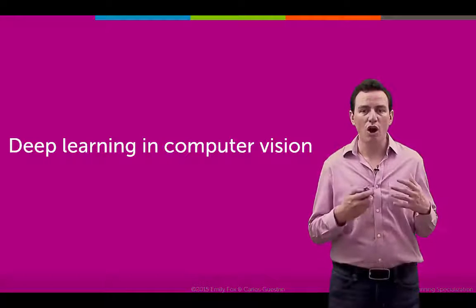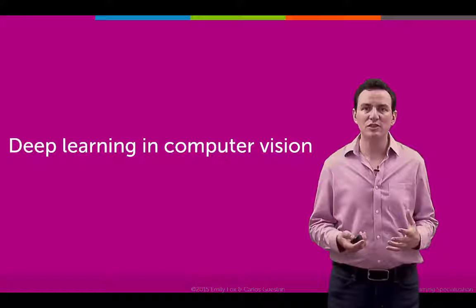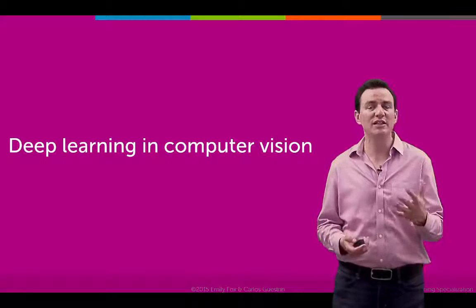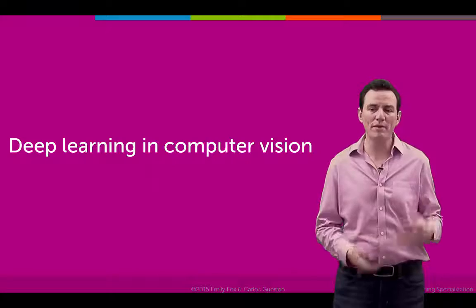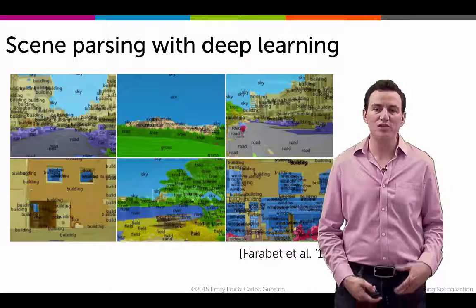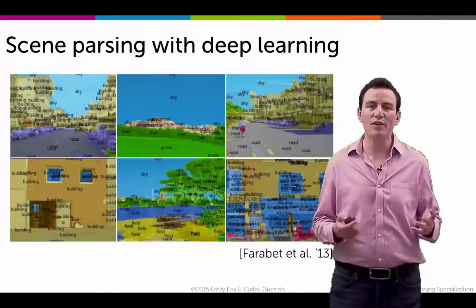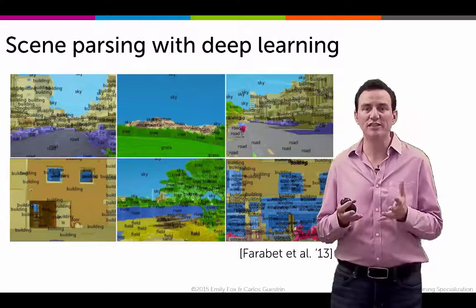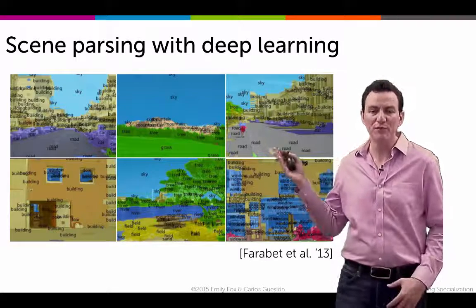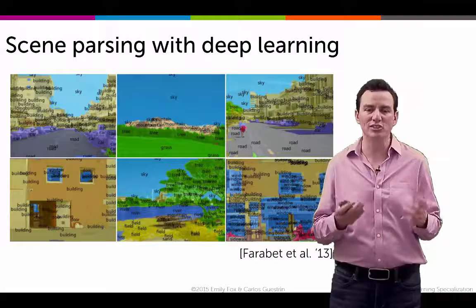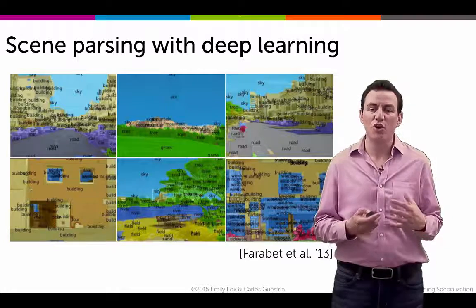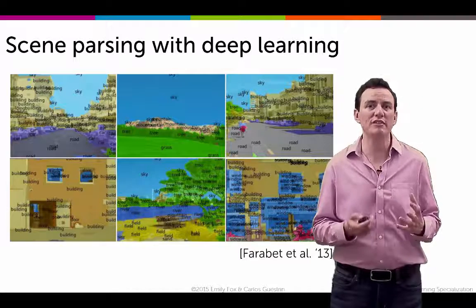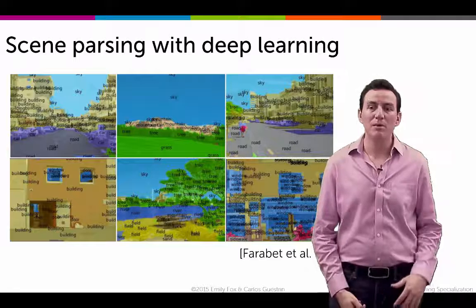Neural networks in computer vision can do quite a bit more than classification — for example, image parsing. For every pixel in the image, you're trying to classify it and discover regions. In the center top image you can see a region of sky, another region of grass, and so on. This kind of image description, called scene understanding, is pretty cool and neural networks provided significant gains.